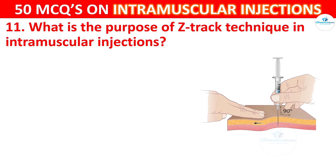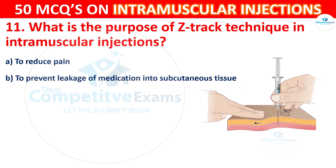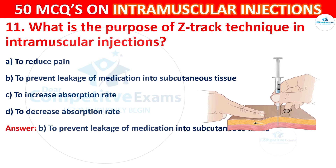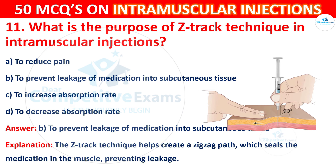Question 11: What is the purpose of the Z-Track technique in intramuscular injection? Options are: to reduce pain, to prevent leakage of medication into subcutaneous tissue, to increase absorption rate, or to decrease absorption rate. The correct answer is B, to prevent leakage of medication into subcutaneous tissue. The Z-Track technique creates a zigzag path which seals the medication in the muscle, preventing leakage.